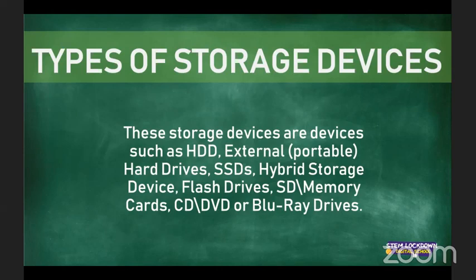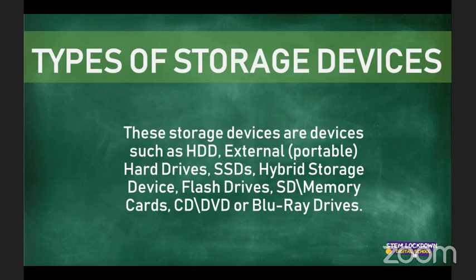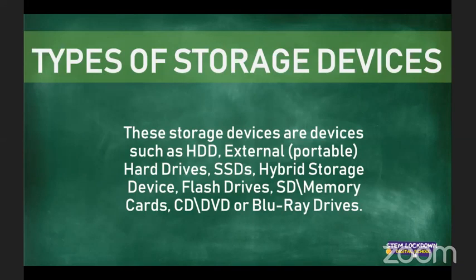A hard disk drive is a secondary storage device — its main function is to store data permanently by controlling the reading and writing onto the disk. A solid state drive is a type of storage device that has no moving parts and produces less heat, which increases its lifespan.